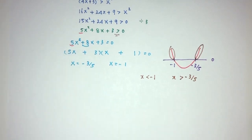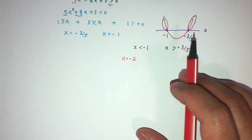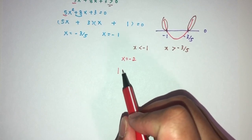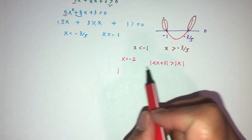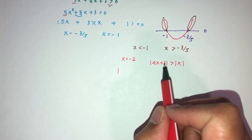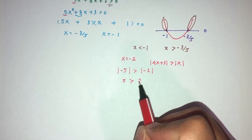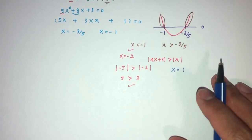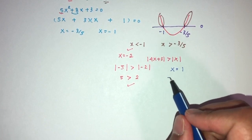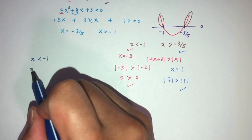Let's check those values. Take x = −2 and replace in the main modulus equation. We get |−8 + 3| = 5, which is indeed greater than |−2| = 2. Good to go. Let's also try x = 1: |4 + 3| = 7, which is indeed greater than 1. Confirmed. So the answer for question 1 is x < −1 or x > −3/5.